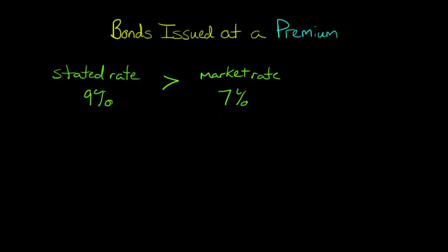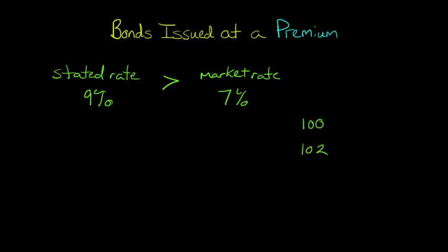So what do you do? You say, well, we're not going to issue these bonds at 9% when the market rate is 7%, so what you do is sell the bonds at a premium. Basically, investors will be willing to pay more than the face value of the bonds. So let's say it's a $100 bond — maybe they give you $102 for it. They're giving you a premium, more than the face value, because your bonds are paying interest at a higher rate than the market rate.